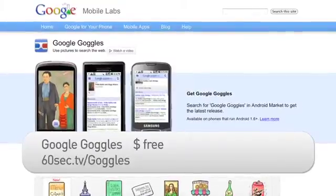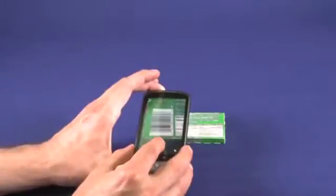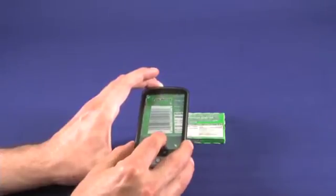Google Goggles is a new way to search on your Android phone. Basically, you point the camera on the back of your phone at an object, snap a picture, and Google Goggles will search and give you details.